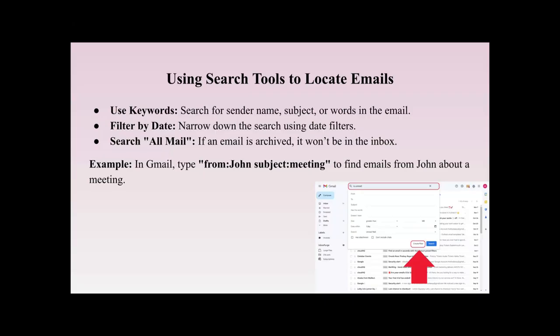You can also search all mail. If an email is archived it won't be in the inbox, so you have to specifically look in your archives rather than just searching your inbox. In Gmail, for example, you can type 'from:John' and 'subject:meeting' — those are two keywords the software will search for. That's an example of how you can use search tools to locate specific emails.